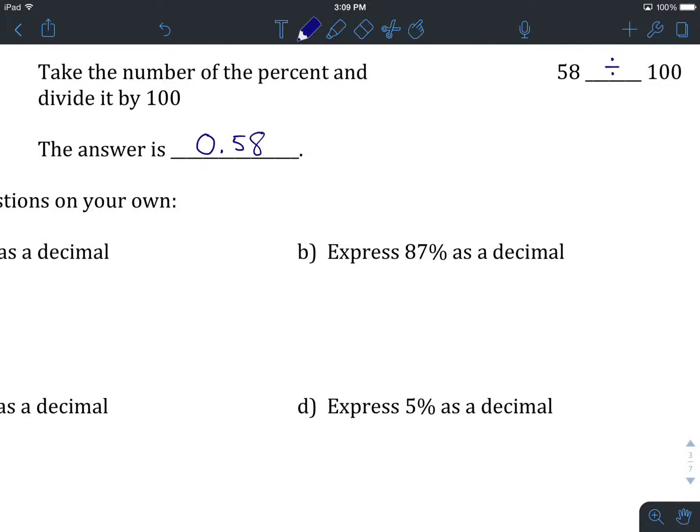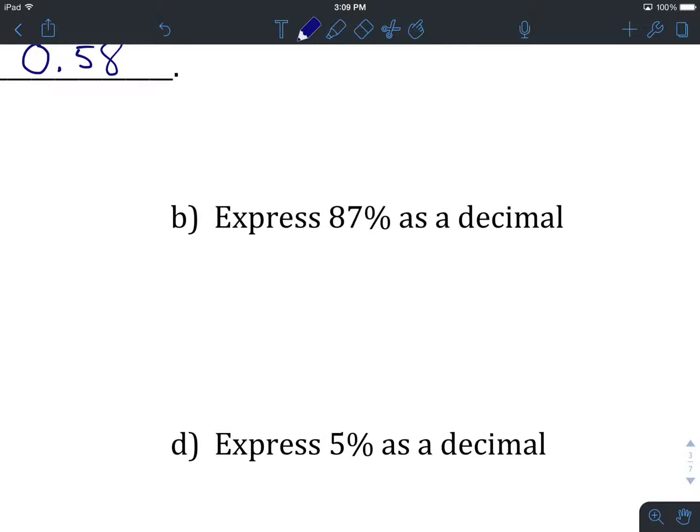So you should be typing in these calculations along with me on your own calculator. Now's the time to try one on your own. So what I'd like you to do here is hit the pause button, try B. When you think you've expressed 87% successfully as a decimal, come on back and we'll see how you did.